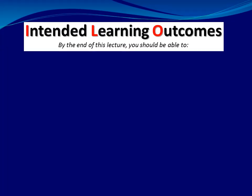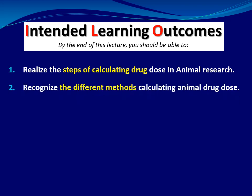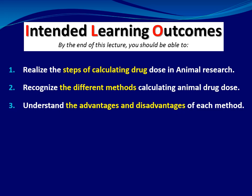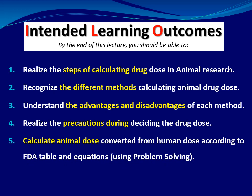By the end of this lesson we should be able to: number one, realize the steps of calculating drug dose in animal research; number two, recognize the different methods in calculating animal drug dose; number three, understand the advantages and disadvantages of each method; number four, realize the precautions that should be taken during deciding the drug dose; and number five, calculate animal dose converting from human dose according to the FDA table and equations using problem solving.